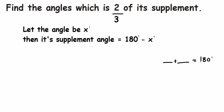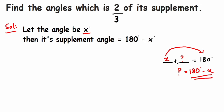To find the angle, I am going to assume the angle to be equal to x. Suppose the angle is x, then its supplementary angle will be 180 minus x. To find the supplement of x, I transpose x to the other side, so the supplementary angle of x equals 180 degrees minus x.